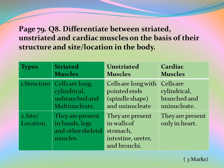Page 79, Question 8: Differentiate between striated, unstriated, and cardiac muscles on the basis of their structure and site location. Striated muscle cells are long, cylindrical, unbranched, and multinucleate; located in hands, legs, and other skeletal muscles. Unstriated muscle cells are long, spindle-shaped, with pointed ends, and uninucleate; present in walls of stomach, intestine, ureter, and bronchi. Cardiac muscle cells are cylindrical, branched, and uninucleate; present only in the heart.